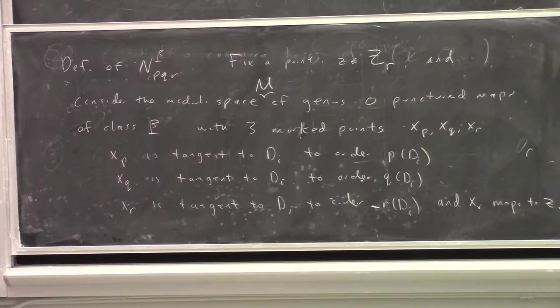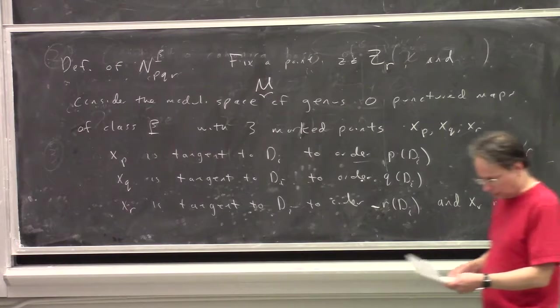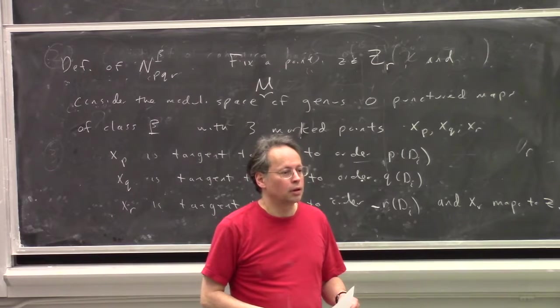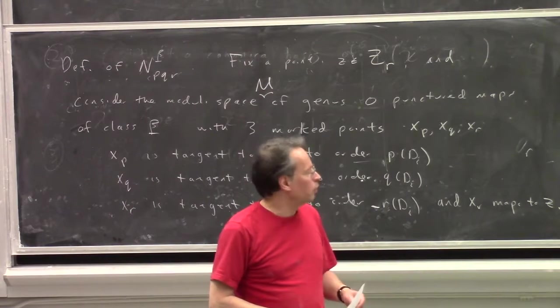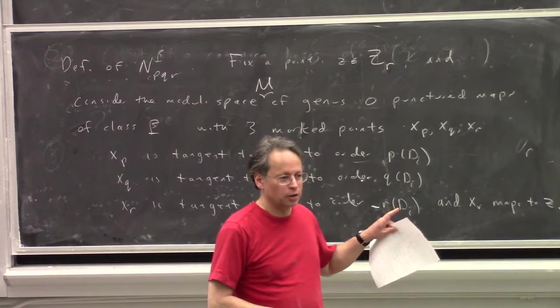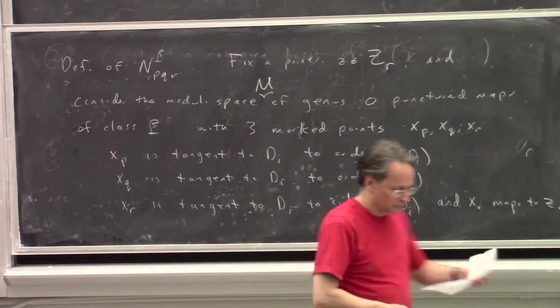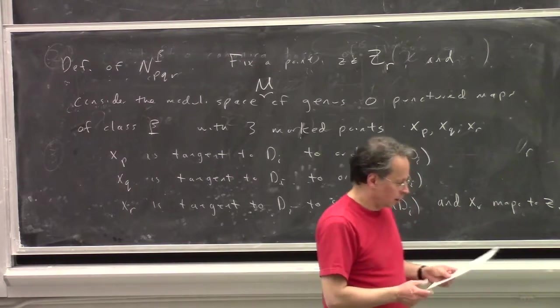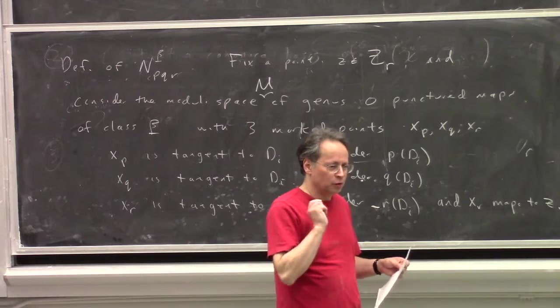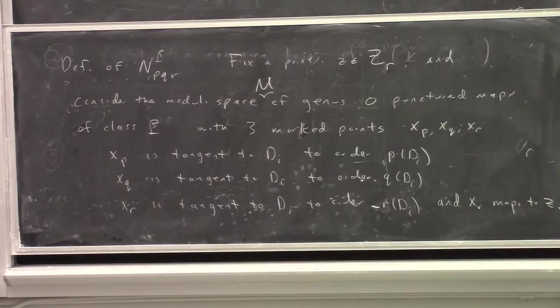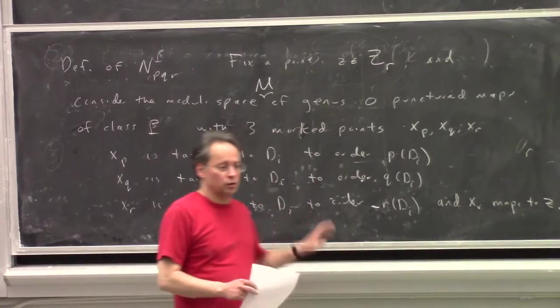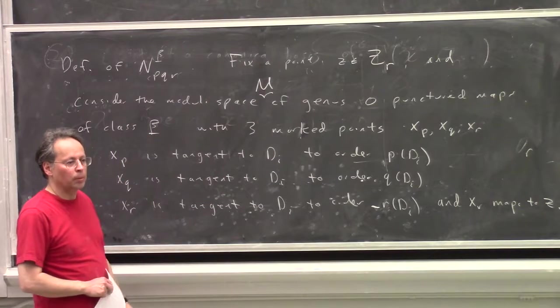x_p is tangent to D_i to order p(D_i). And similarly, x_q is tangent to D_i to order q(D_i). And now here's the interesting part: x_r is the output. x_r is tangent to D_i to order minus r(D_i). And we insist that the point maps to z_r. So it turns out if you set this up correctly, which takes a little bit of effort, but you do get a situation where you do have a virtual fundamental class.